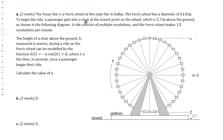This video is about modeling sinusoidal functions. Texas Star is a ferris wheel at the State Fair in Dallas. The ferris wheel has a diameter of 61.8 meters. To begin the ride, a passenger gets into a chair at the lowest point on the wheel, which is 2.7 meters above the ground.